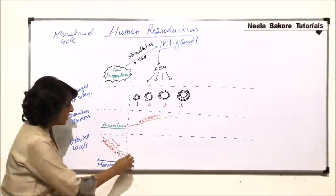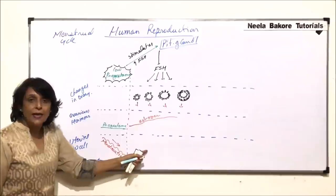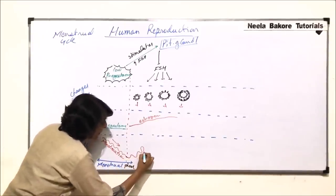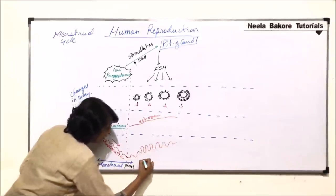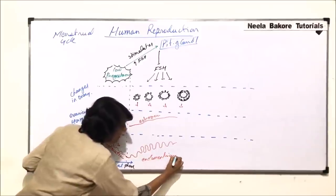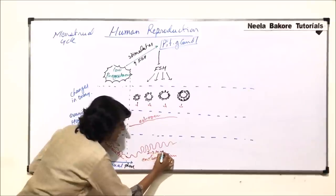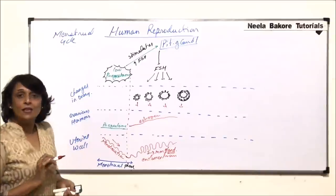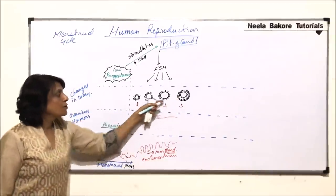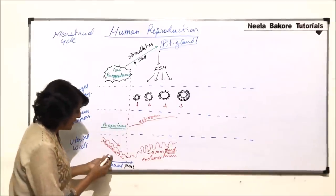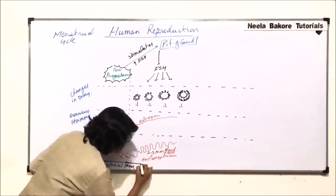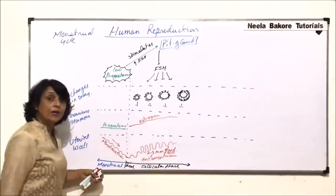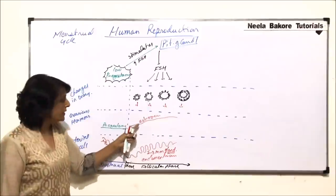Because of the rising estrogen, the endometrial lining — which was scraped off — starts to repair itself. It becomes thick and folded, about two to three millimeters thick and glandular, with glands forming to produce secretions. This phase is under the influence of the follicles and is therefore known as the follicular phase, because the primary follicle is growing and producing hormones that drive these endometrial changes.